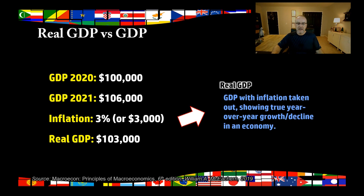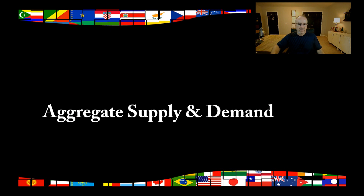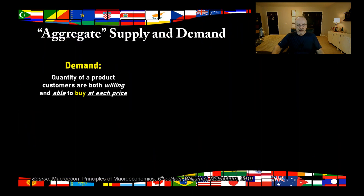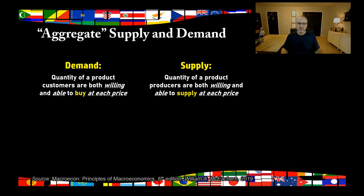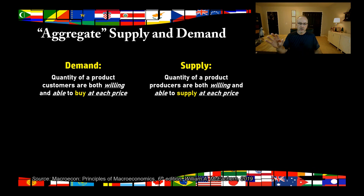Now let's discuss aggregate supply and demand. We talked about supply and demand in our last session — demand was the quantity of a product that customers are both willing and able to buy at each price, and supply is the quantity producers are willing and able to supply at each price. You can look at those for individual products like Mountain Dew or Pepsi Cola, or for product categories like sodas or appliances. But you can also look at them in an aggregate way.